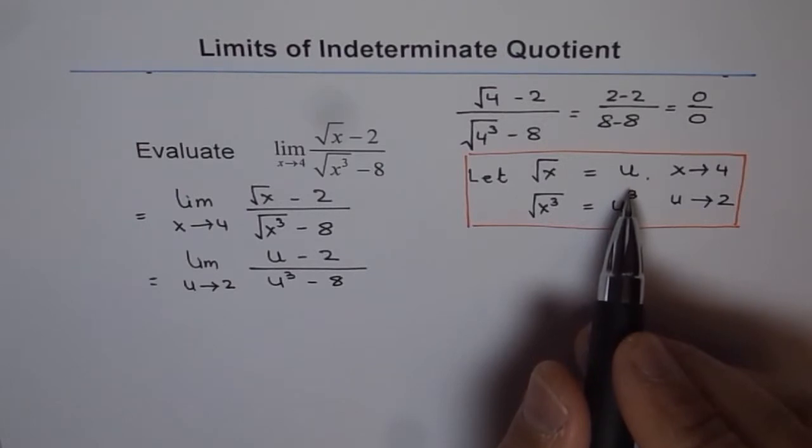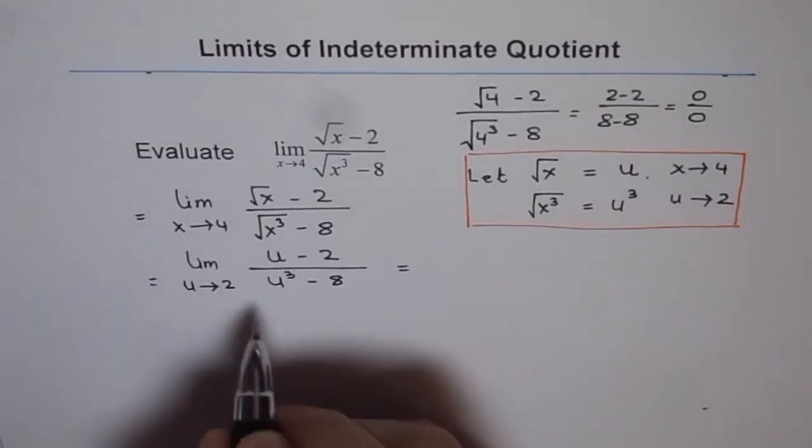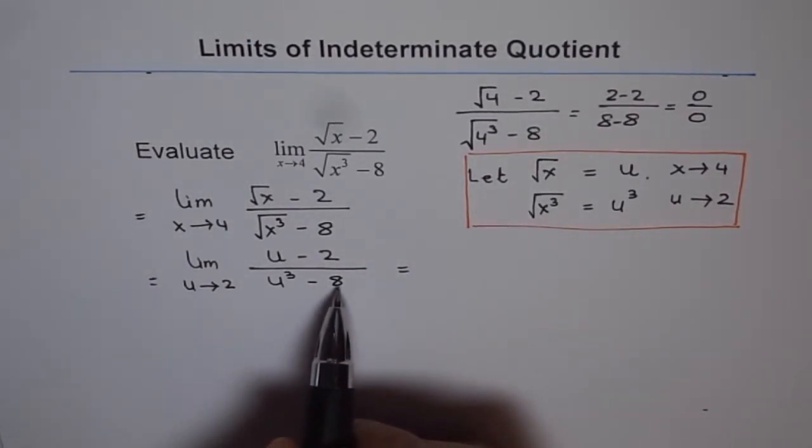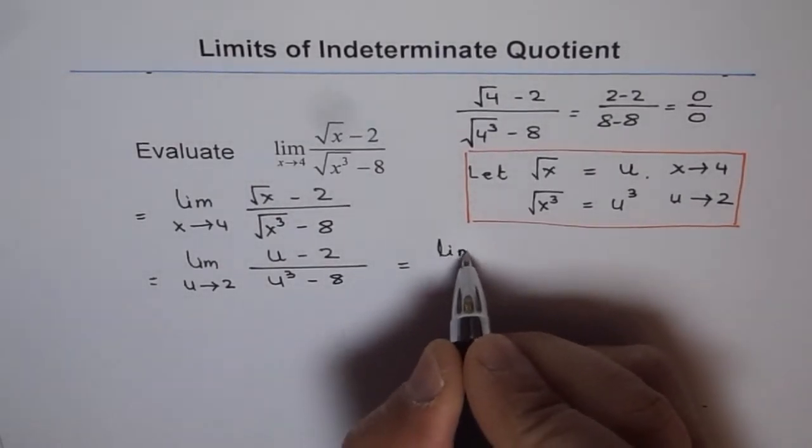Whenever you have radicals in your expressions, try to take help of substitution. Now, the denominator is difference of cubes. 8 is 2 cubed, and therefore we can factor and simplify.